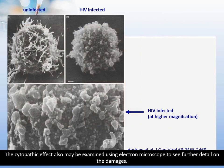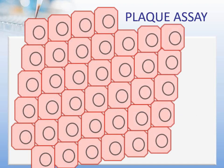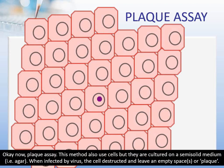The cytopathic effect may also be examined under electron microscope to see further detail on the damage, as seen here with HIV-infected lymphocytes. Now, plaque assay.